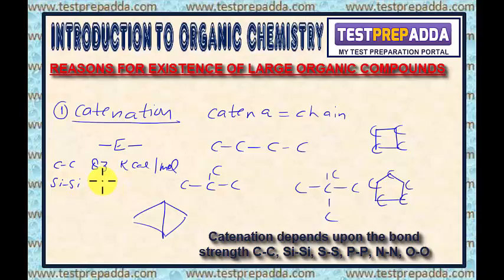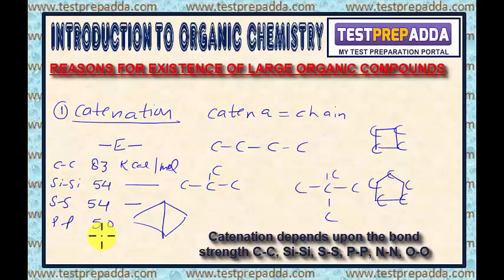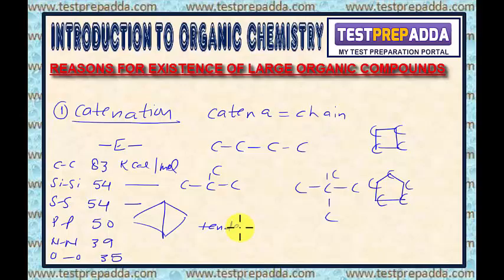For example, the carbon-carbon bond energy is 83 kilocalories per mole. Comparing with silicon, the bond enthalpy is 54 kilocalories per mole. For sulfur, it is 54 kilocalories per mole. For phosphorus, this bond enthalpy is 50 kilocalories per mole. For nitrogen, it is 39 kilocalories per mole. So, on the basis of this data, we can conclude the tendency to form chains of identical atoms: carbon is greater than silicon, and silicon and sulfur are almost the same, which is greater than phosphorus.